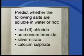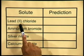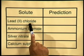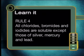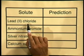Now let's have a look at how we can use these rules. Predict whether the following salts are soluble in water or not: lead 2 chloride, ammonium bromide, silver nitrate and calcium sulfate. I have drawn up a table to record my predictions. Lead 2 chloride contains a chloride ion. So now let's look at rule number 4: all chlorides, bromides and iodides are soluble except those of silver, mercury and lead. This means that lead 2 chloride is insoluble.